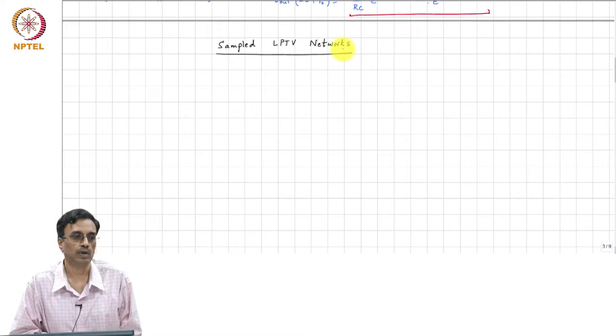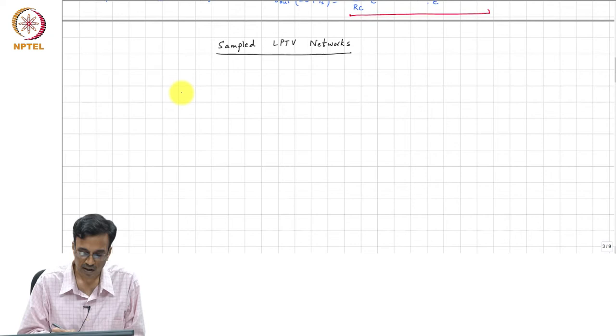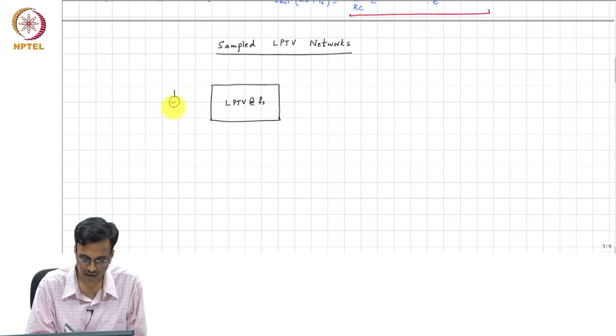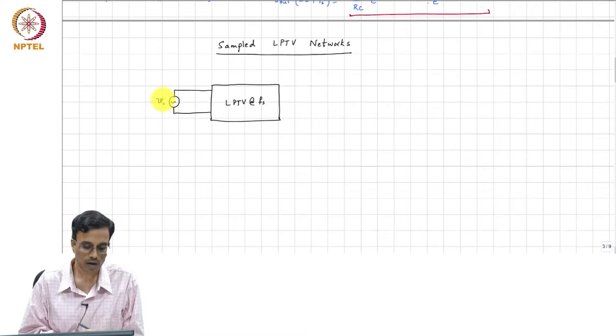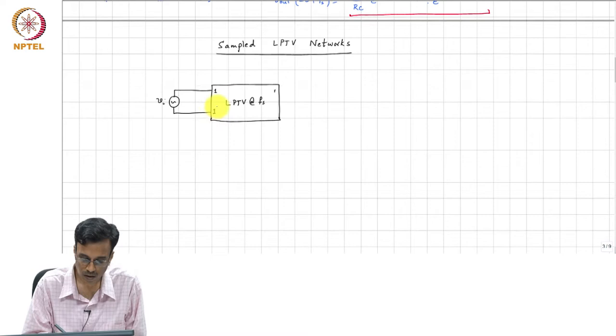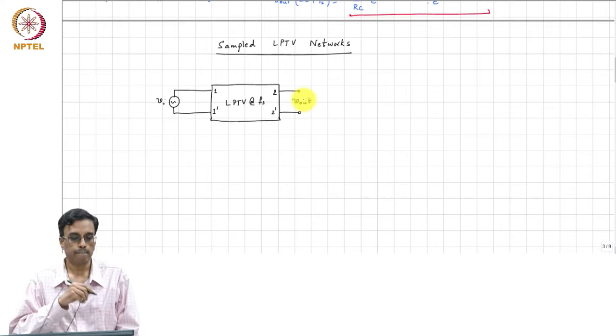It turns out that a very common application of LPTV networks or LPTV circuits is where the output... this is the LPTV at F_s and let's say this is some voltage which is driving the LPTV network. And this is V_out.